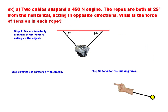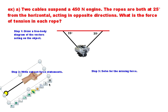Let's take a look at one particular problem. This one says two cables suspend a 450 newton engine. The ropes are both at 25 degrees from the horizontal and they act in opposite directions. Here you can see the ropes. What's the force of tension in each of the ropes?